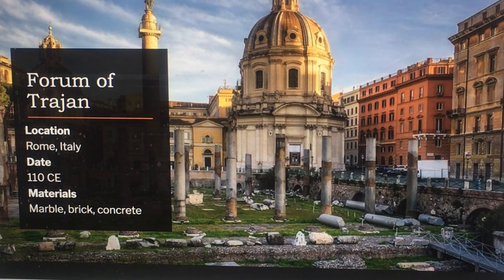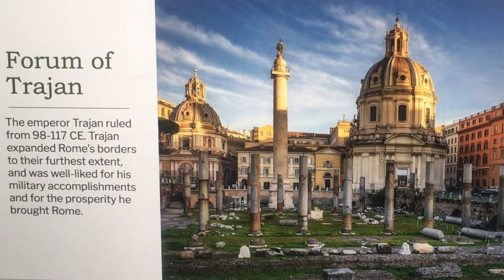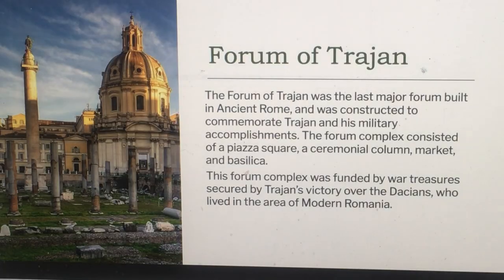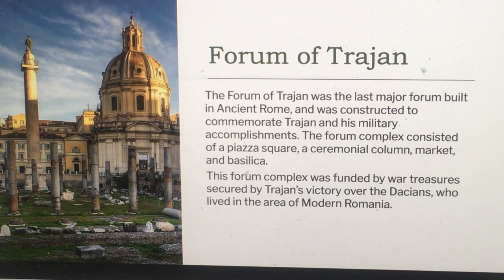Here's the Forum of Trajan, located in Rome, 110 CE, built with brick, marble, and concrete. Emperor Trajan ruled from 98 to 117 CE. He expanded Rome's borders to their furthest extent and was well liked for his military accomplishments and the prosperity he brought to Rome. The Forum of Trajan was the last major forum built in ancient Rome, constructed to commemorate Trajan and his military accomplishments. The forum complex consisted of a piazza square, a ceremonial column, market, and basilica, and was funded by war treasures secured by Trajan's victory over the Dacians, who lived in the area of modern Romania.